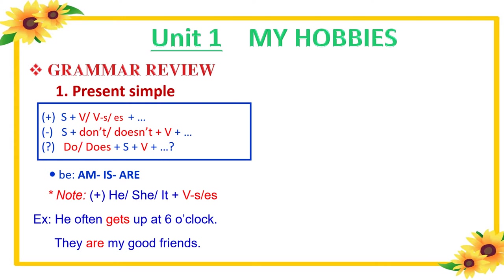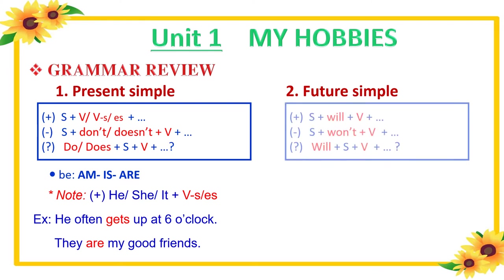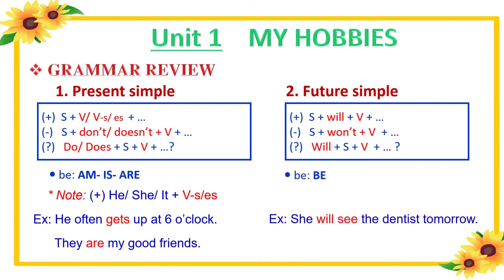The second grammar point is the Future Simple tense. Here are the forms of ordinary verbs: affirmative form — subject + will + verb; negative form — subject + won't + verb; interrogative form — will + subject + verb. The verb to be in this tense is 'will be.' Here are some examples: she will see the dentist tomorrow; I will be 14 on my next birthday.